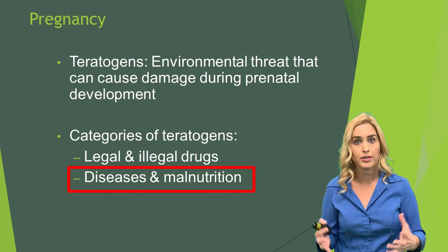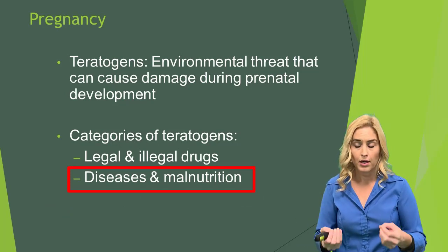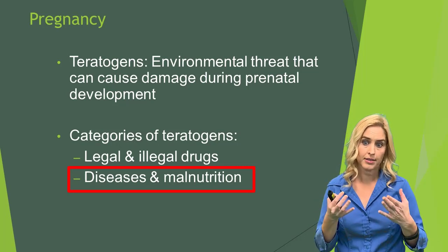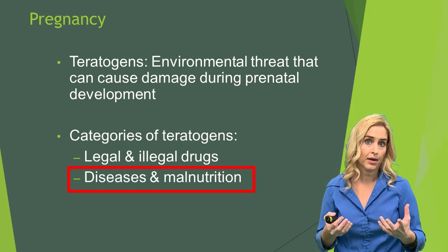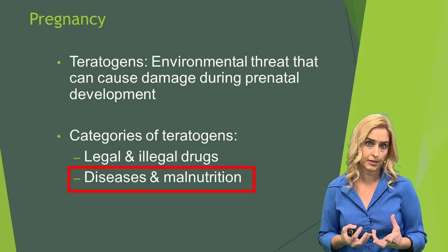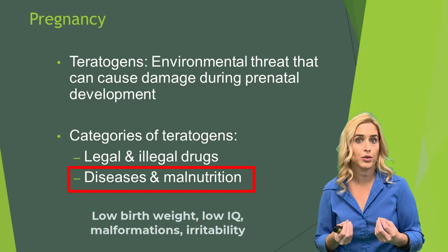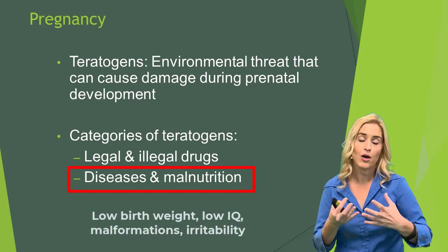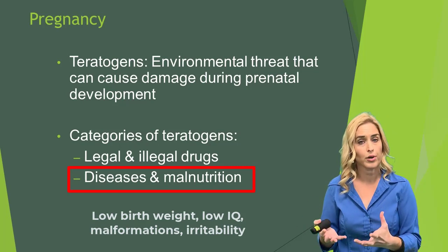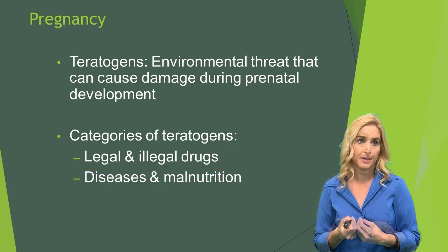Disease and malnutrition are some of the biggest issues we see worldwide for fetuses. With disease, we're looking at things like HIV, measles, rubella, and mumps — conditions that really affect the fetus. This can cause things like low birth weight, low IQ, malformations, and also difficulty and irritability with the child once they are born. When a child is irritable, it can be difficult for parents to bond with that baby.